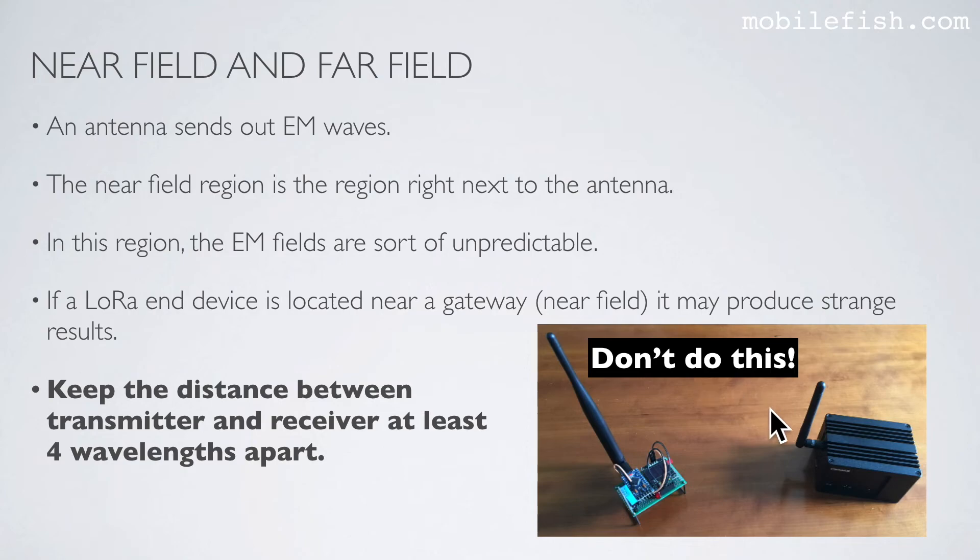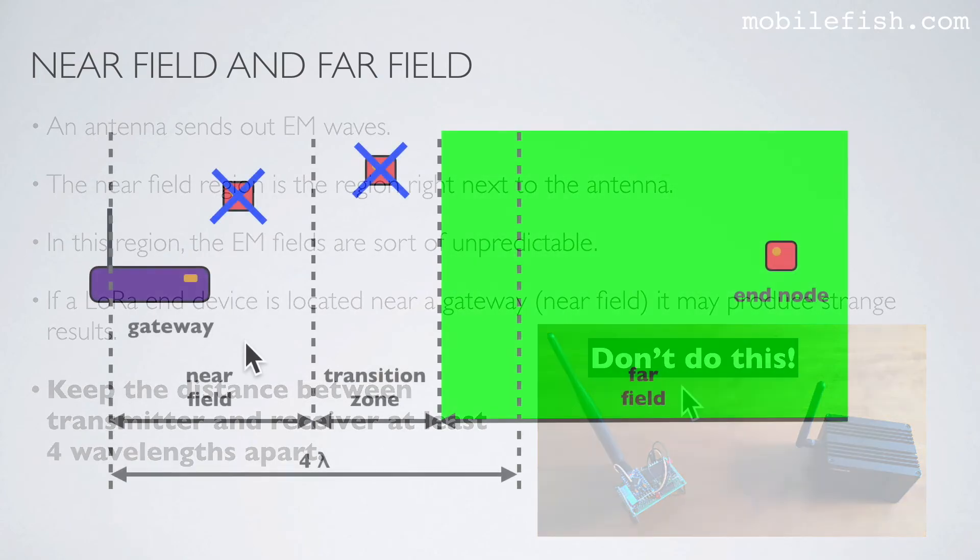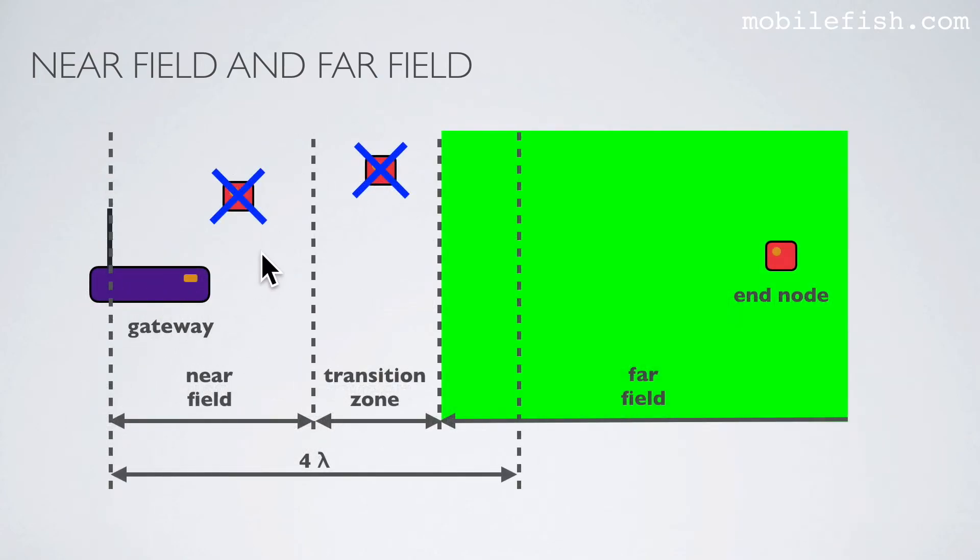Here is a gateway, and here you can find two nodes. Both nodes are located near the gateway. This node is within the near-field region. And this node is in the transition zone. This is called the far-field region. Keep the distance between transmitter and receiver at least 4 wavelengths apart.